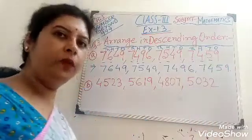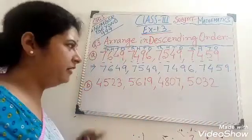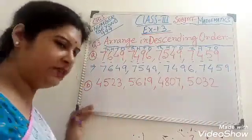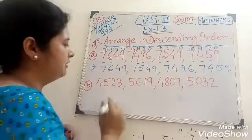So we write down first 7,496, and our last smaller number is 7,459. Hope it is clear to you all. Now do the same with the next sum.